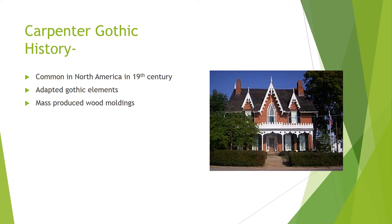The Carpenter Gothic Style became common in North America in the late 19th century. It adapted Gothic elements such as pointed arches, steep gables, and towers. The development of mass production of wood moldings helped new homes mimic the high Gothic look.